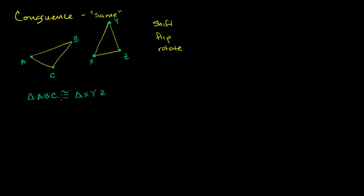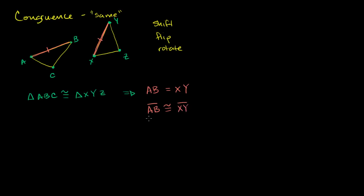So if we make this assumption, or if someone tells us this is true, then we know, for example, that AB is going to be equal to XY — the length of segment AB is equal to the length of segment XY. A corresponds to X, B corresponds to Y, and C corresponds to Z. So side AB has the same length as side XY. You could also say that line segment AB is congruent to line segment XY, but congruence of line segments really just means that their lengths are equivalent.